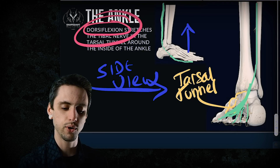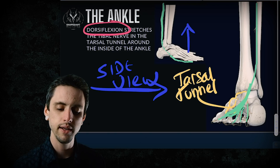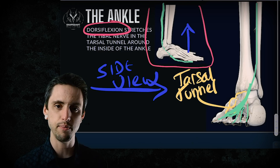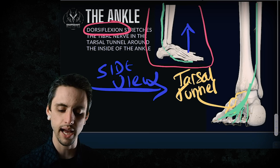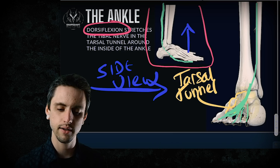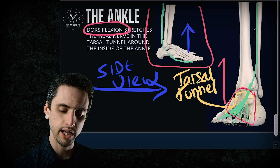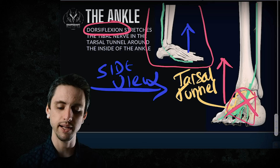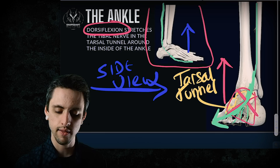Next, the ankle — dorsiflexion stretches the nerves. Now we're talking about the tibial nerve. The tibial nerve wraps around the inside of the ankle at what we call the tarsal tunnel. When you take the foot and lift it up into dorsiflexion, you see compression at the tarsal tunnel — it stretches the nerves by pulling them down through that area.